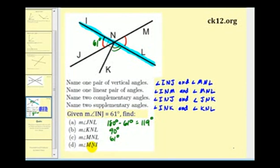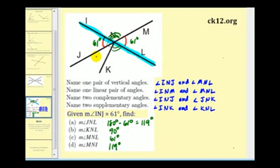The last angle is angle MNI. Since angle MNI and angle LNM are supplementary, and angle LNM is 61 degrees, angle MNI must be 119 degrees. Notice that MNI and angle JNL are vertical angles and therefore equal — both are 119 degrees, consistent with what we found earlier. I hope you found this helpful. Thank you for watching.